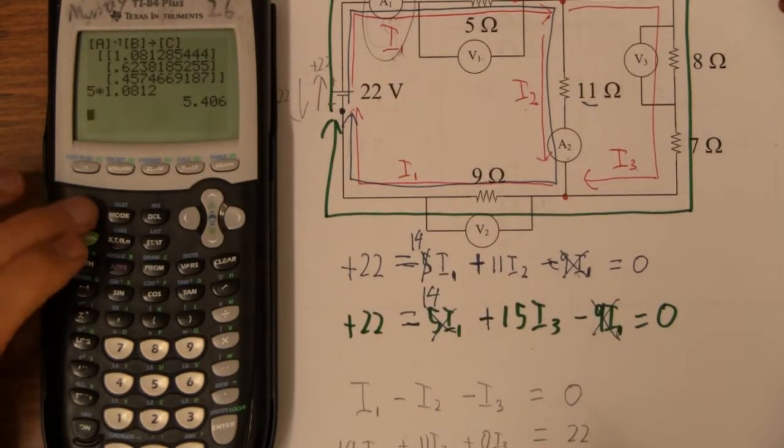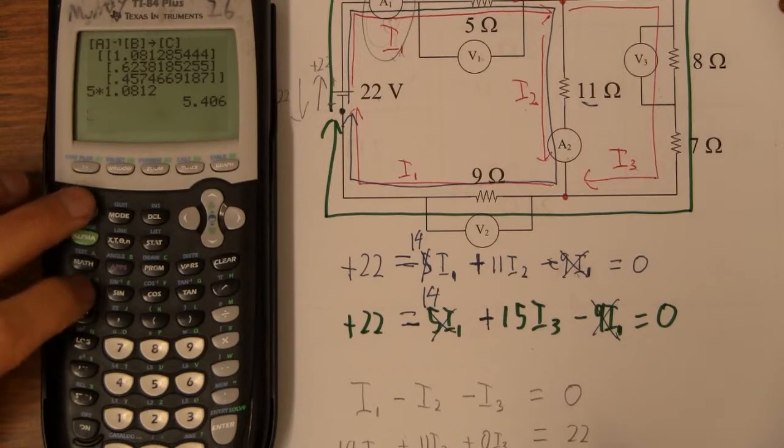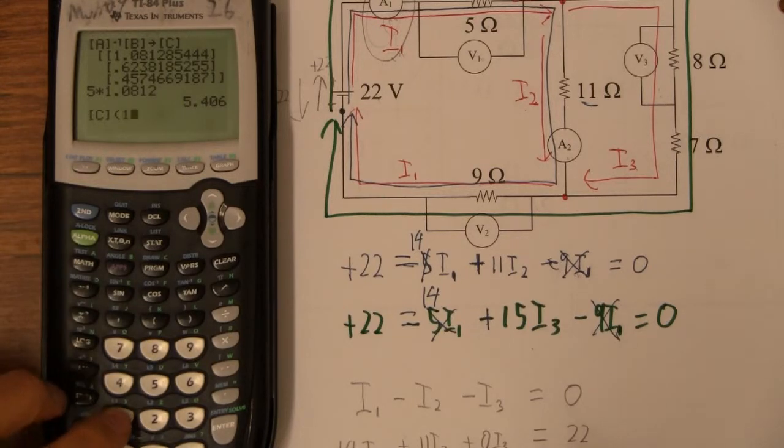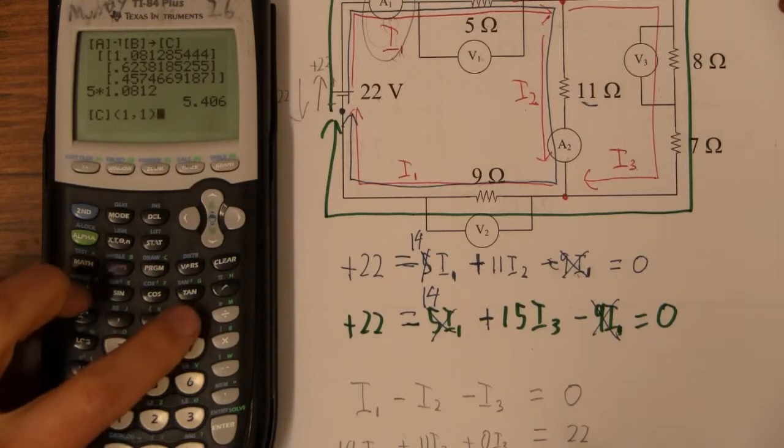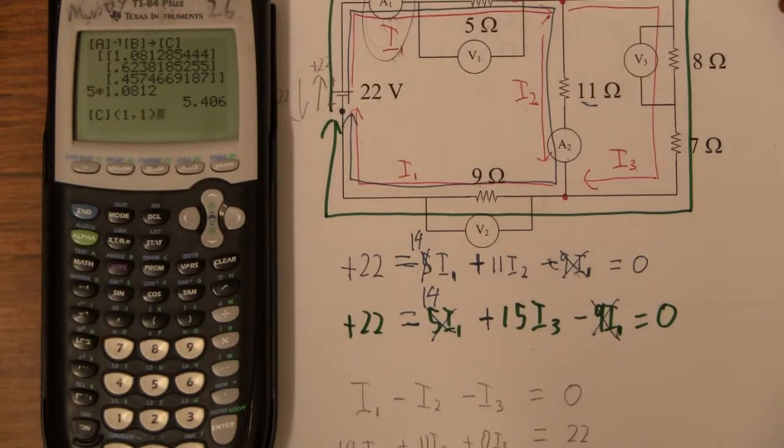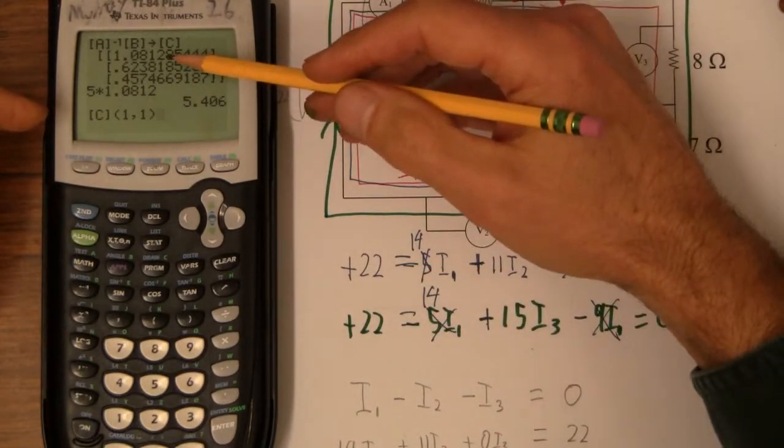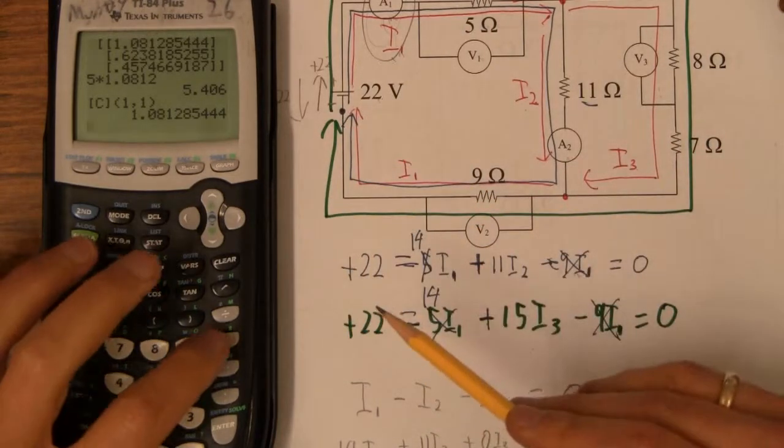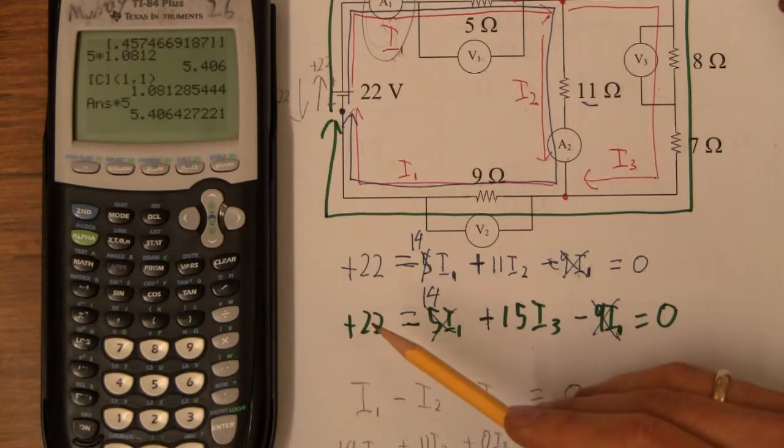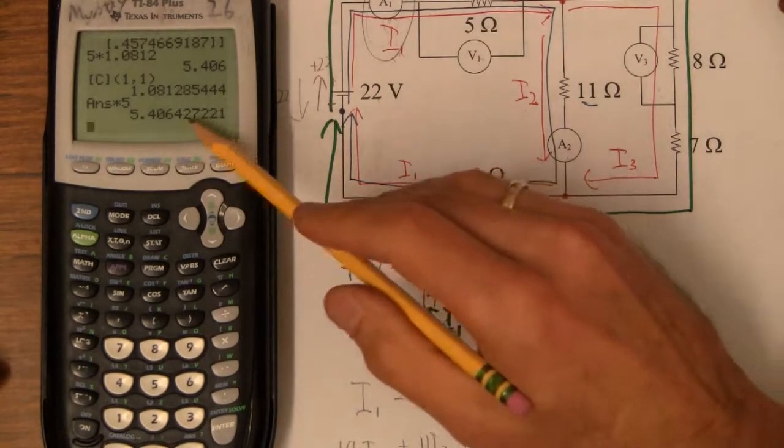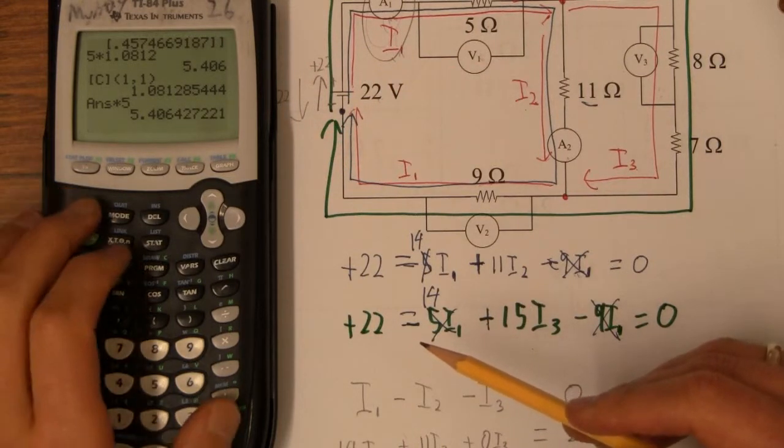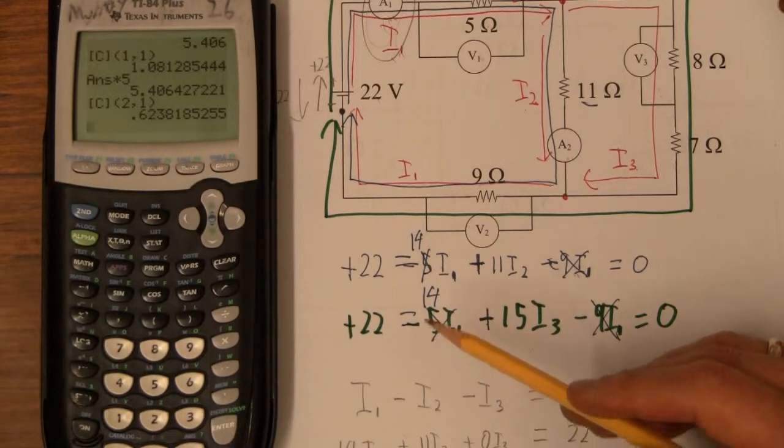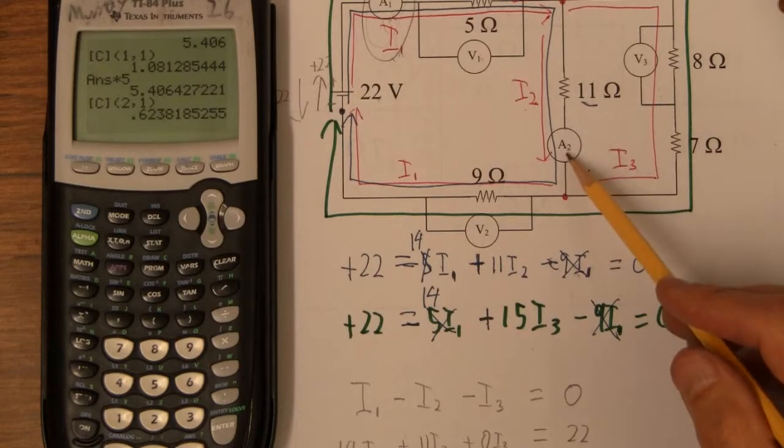I can take matrix C and actually index it. Watch this: second matrix C, then you can put parentheses. So I'm going to go 1 comma 1—it's down one, it's the first one, and then it's over one. There it is, I just got that number out of there. So I can go times 5, that's kind of fun isn't it? And there it is all unrounded. Then if I want the next one, I can go second entry, second entry. If I want the next element, I go 2, 1. I can get that out, there's 0.623.